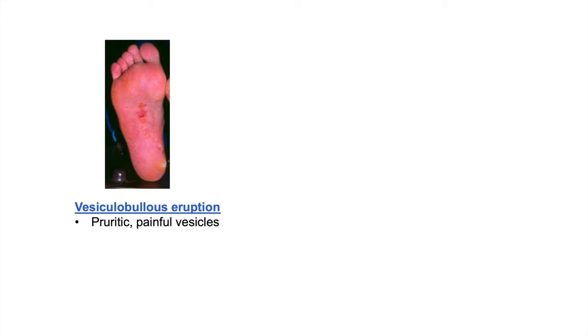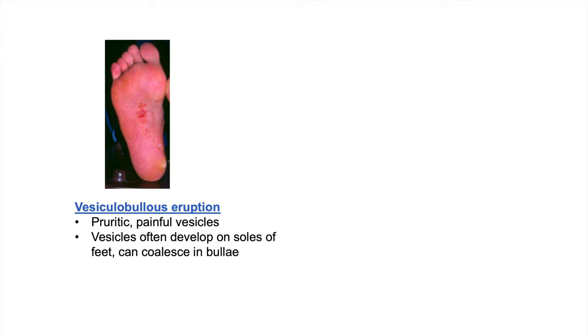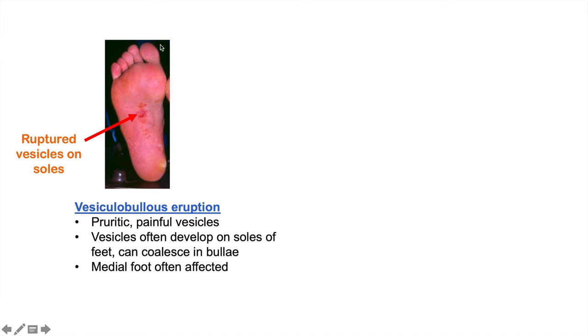The third clinical presentation is vesiculobullous tinea pedis. This is pruritic and has painful vesicles that often develop on the soles of the feet and can coalesce into larger bullae. We can see ruptured vesicles on the soles of the feet, and the medial foot — closer to the midline of the body — is more likely to be affected.